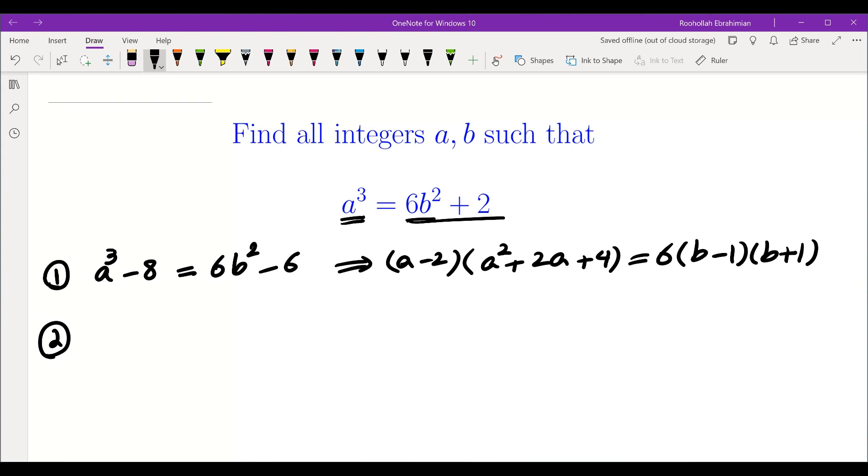The second method was looking at the right side, I noticed that a cubed must be even, which means a must be even. So a is equal to 2 times c for some integer c.